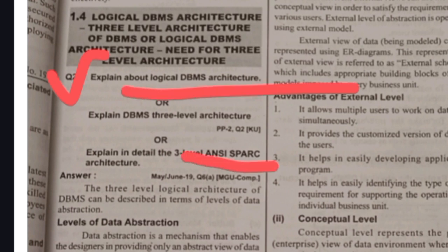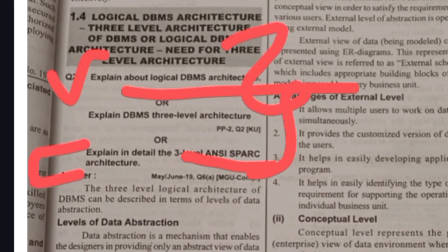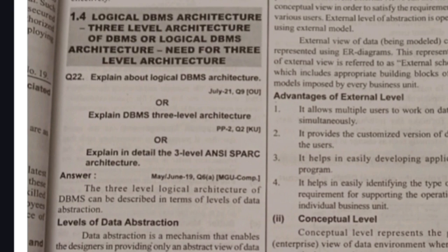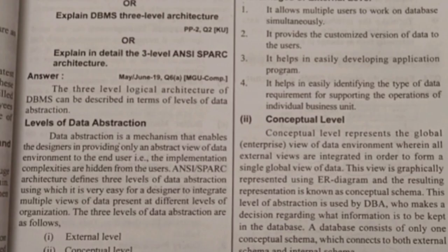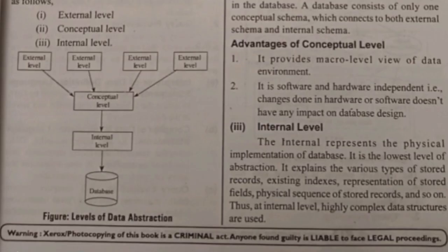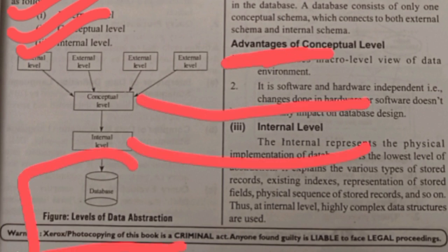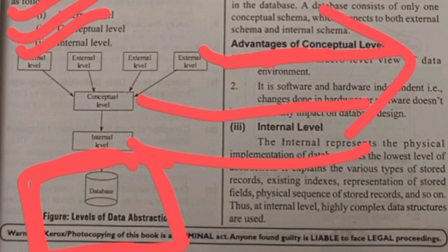The first important question from Unit 1 is: explain about three-level architecture. It is also called ANSI SPARK architecture or logical DBMS architecture. Three-level architecture means the data in our database is divided into three levels. What are the three levels? External level, conceptual level, and internal level.